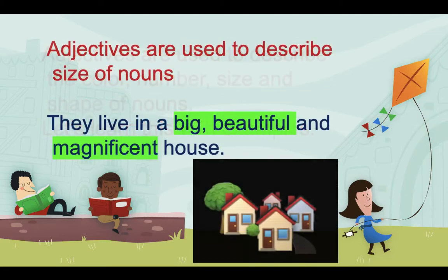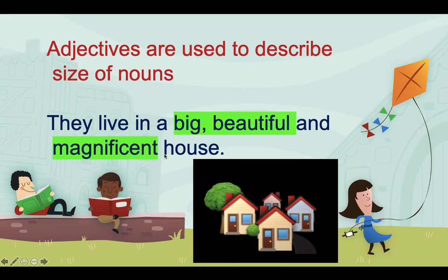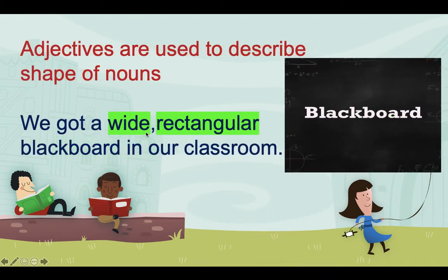Adjectives are also used to describe the size of nouns. For example: 'They live in a big, beautiful, and magnificent house.' When you ask 'what kind of house?', you get 'big,' 'beautiful,' and 'magnificent.' These words describe the noun 'house' and are placed before it.